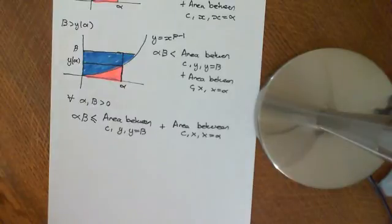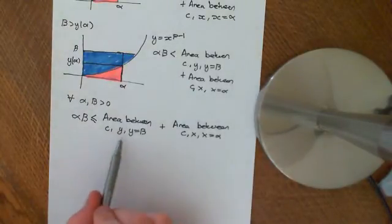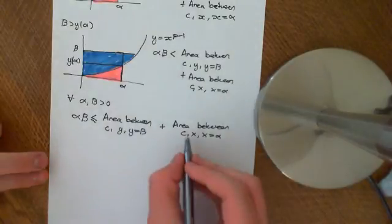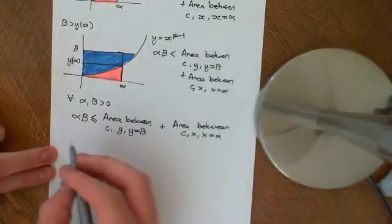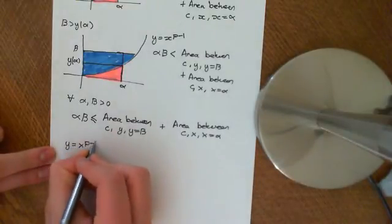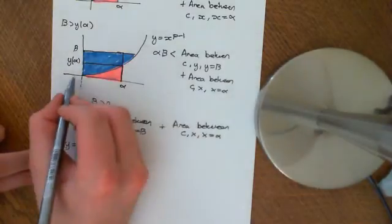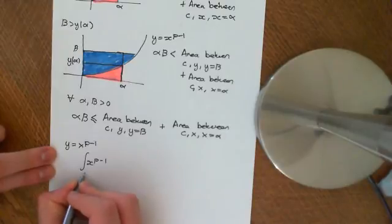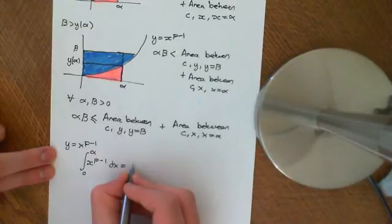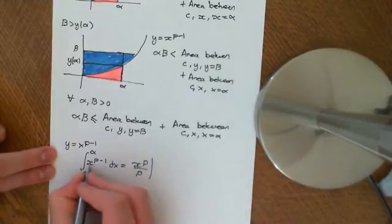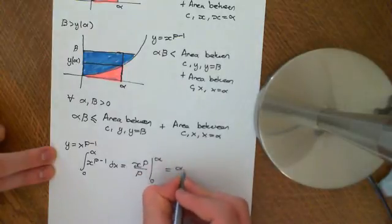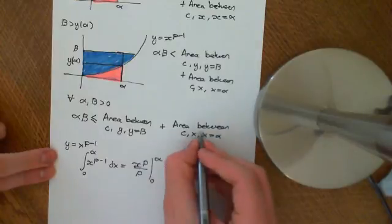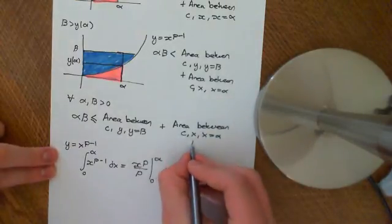Now we do the calculus. The area between the curve, the x-axis, and the line x equals alpha is just the integral of x to the p minus 1 from 0 to alpha dx. By the fundamental theorem of calculus, this equals x to the p over p evaluated from 0 to alpha, which gives alpha to the p over p minus 0. So this area equals alpha to the p over p.